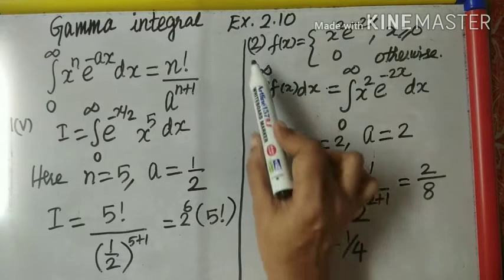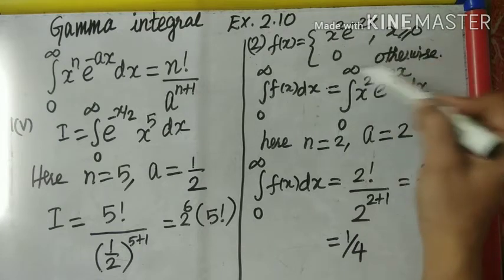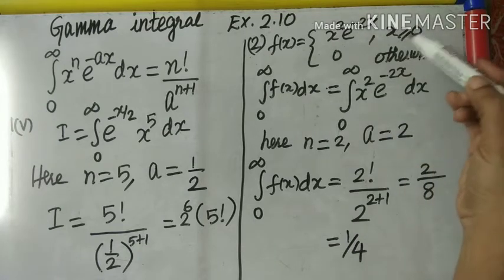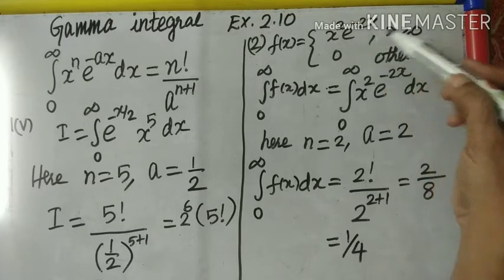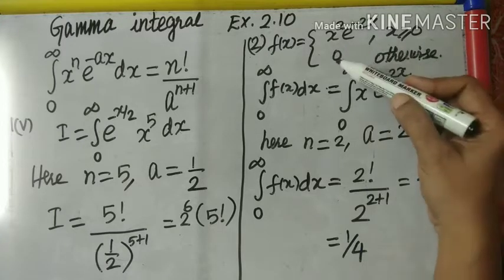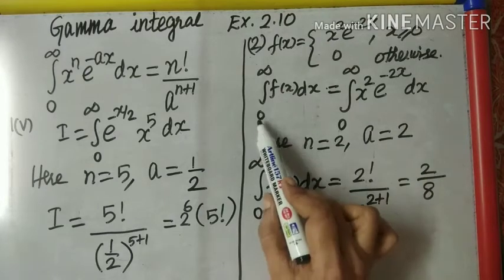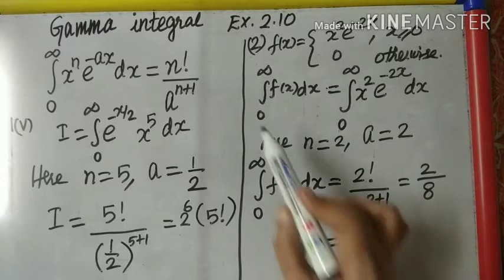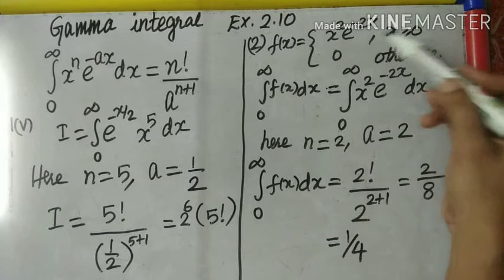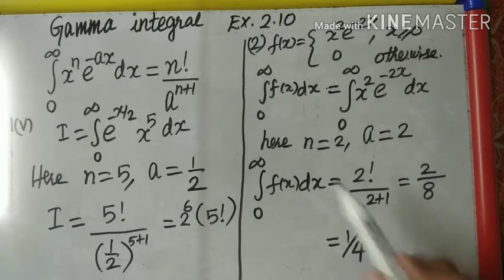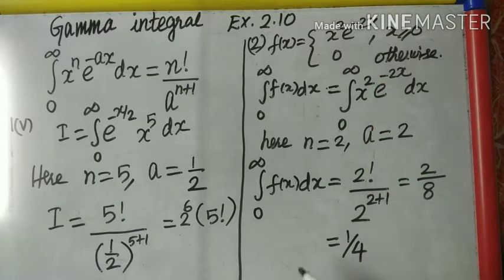Question number 2. f(x) is given such that for x greater than 0 the function has a defined value, otherwise it is 0. The question asks to find the integral from 0 to infinity. Since 0 to infinity means x is above 0, I substitute the defined piece, so f(x) is x squared times e to the power minus 2x dx.